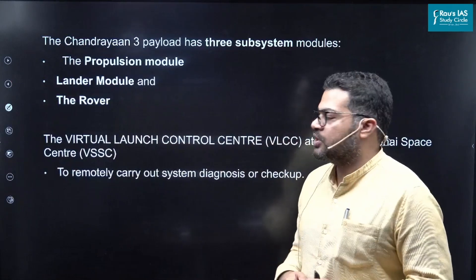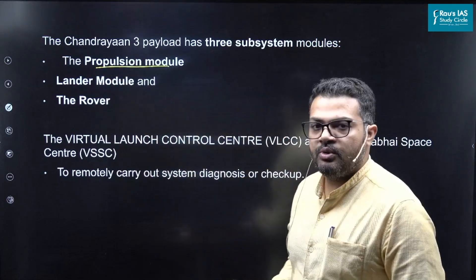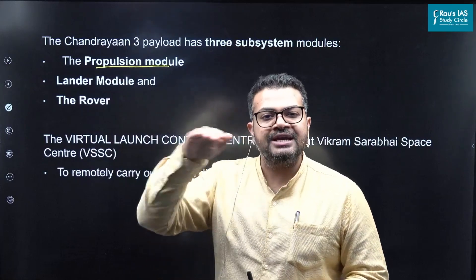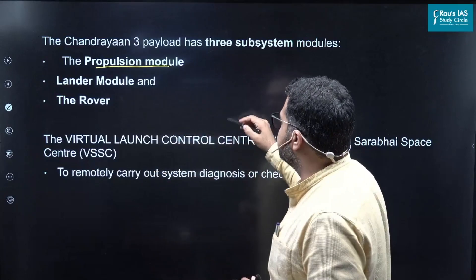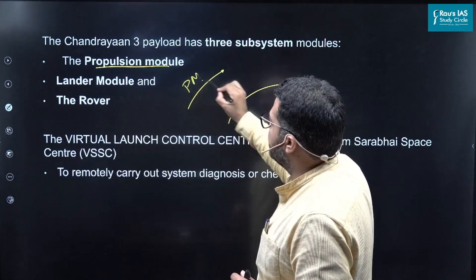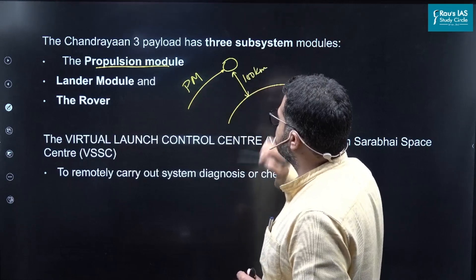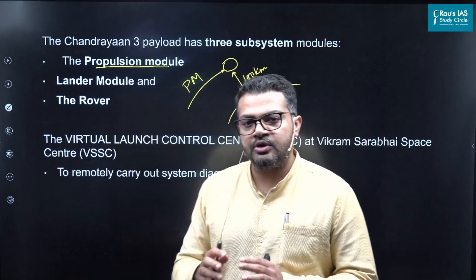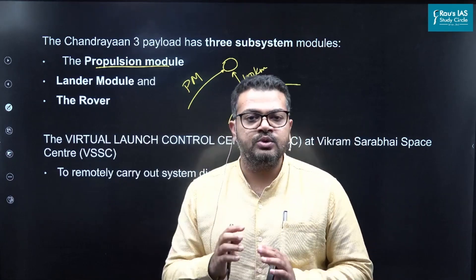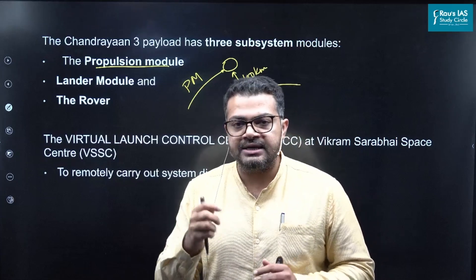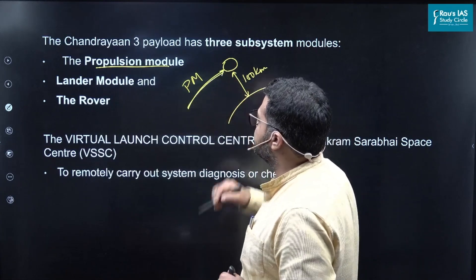Looking at the main payloads or subsystems of the Chandrayaan-3 module, we basically have three modules. The first is the propulsion module, which propels the Chandrayaan into the right orbit around the moon — technically almost 100 kilometers above the moon's surface. The propulsion module did not just complete this objective; it will also remain revolving around the moon for an additional three to six months, and it has certain payloads attached which will perform moon observation as well as Earth observation from the moon.